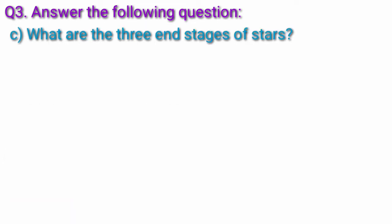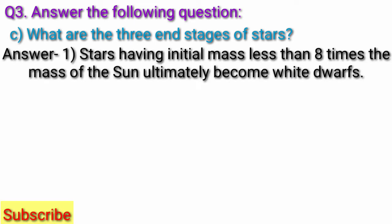Question C, what are the three end stages of stars? Answer, stars having initial mass less than 8 times the mass of the sun ultimately become white dwarfs.